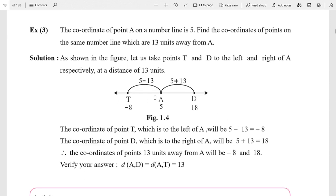If we go left, we subtract the distance from the coordinate. If we go right, we add the distance to the coordinate. Simply, coordinate minus distance, coordinate plus distance. The coordinates of points 13 units away from A will be -8 and 18.